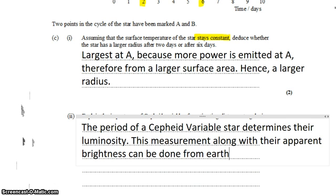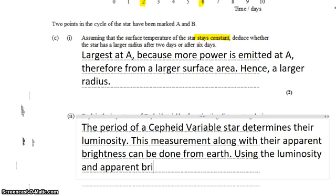So we don't need to move Earth from place to place like we do with the parallax method. We can do all of these measurements from Earth. We can get their luminosity and their apparent brightness. Using the luminosity and the apparent brightness, the distance can be calculated.